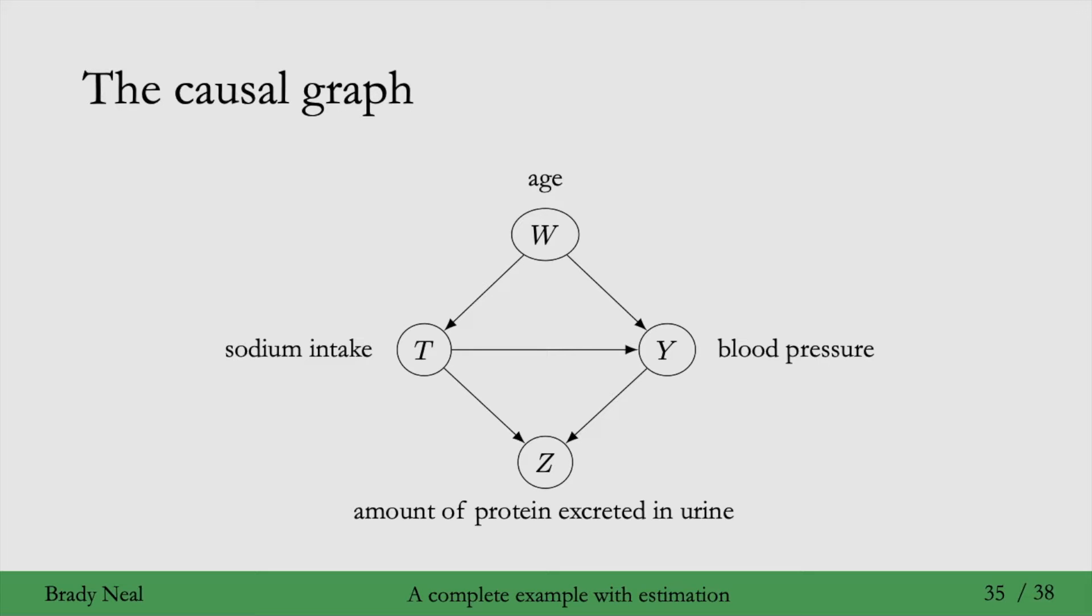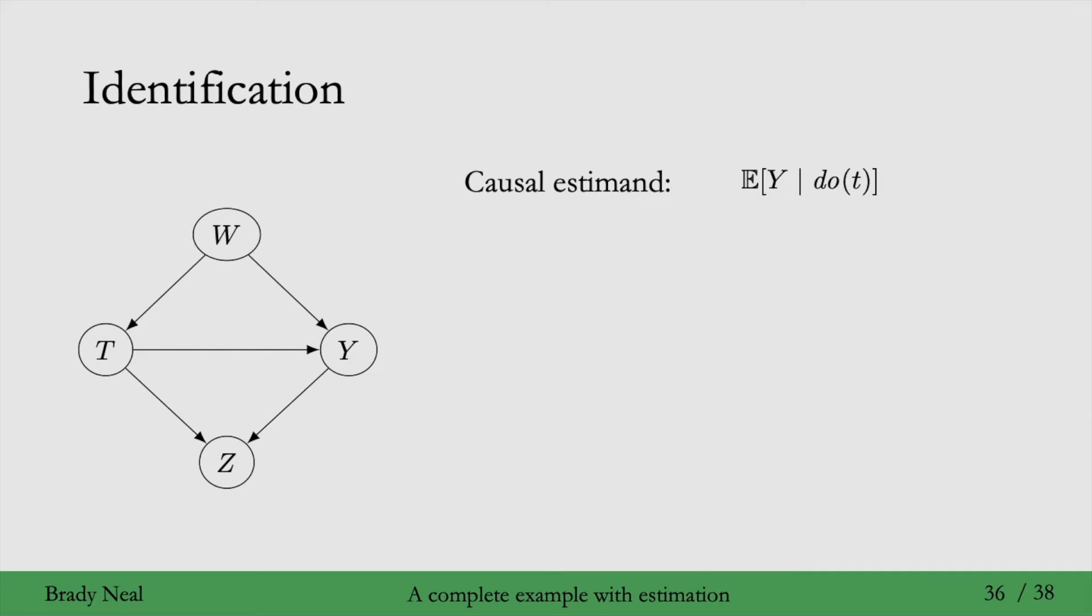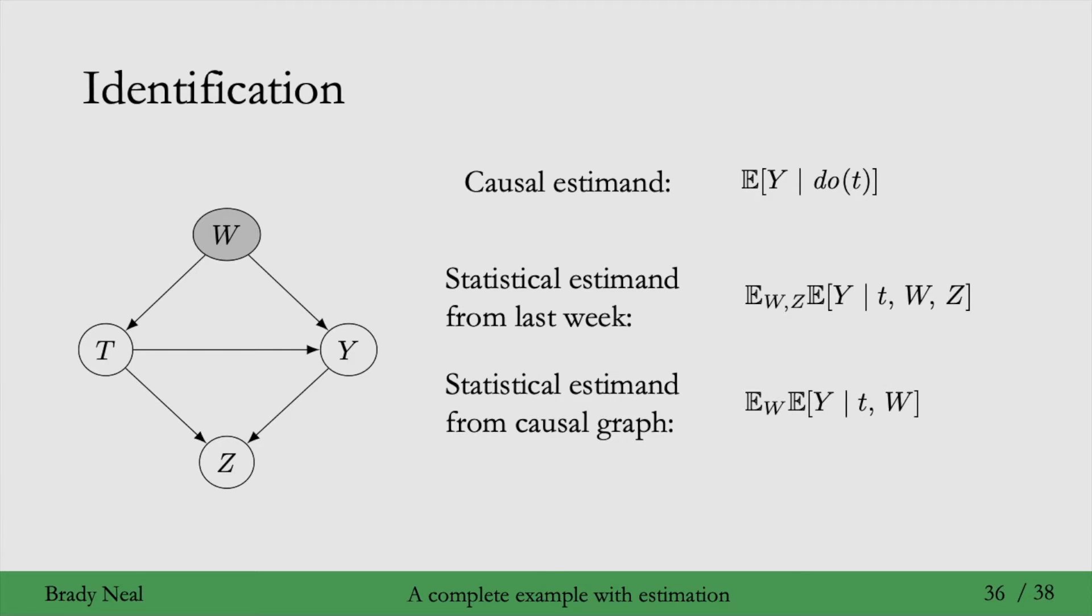So now that we've written down the causal graph, we'll try to identify the causal estimate, which will take the expected value of Y given do T. This is the statistical estimate that we saw last week in the potential outcomes lecture. Importantly, we're conditioning on both W and Z. And as you can see, we shouldn't be conditioning on Z, because it induces collider bias. So to actually identify this causal effect, we need to not condition on Z, which gives us this statistical estimate, which we get from the causal graph.